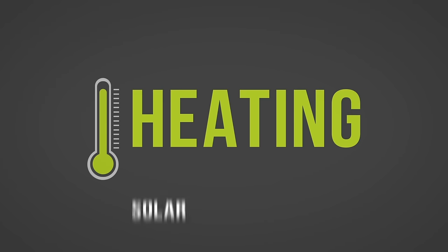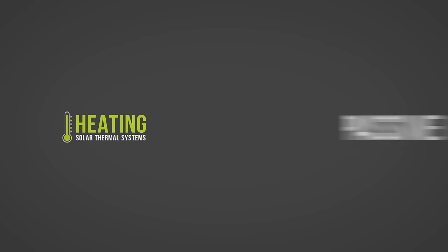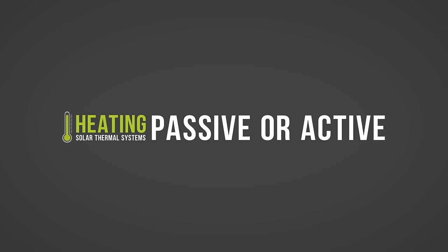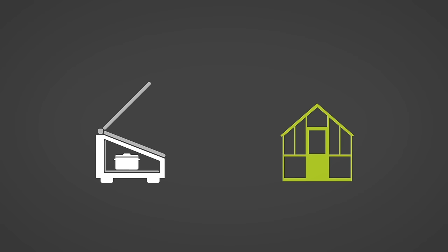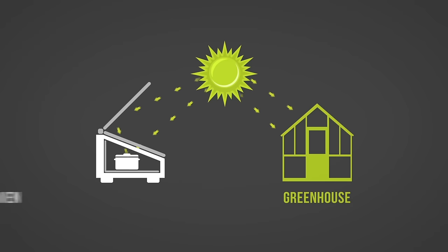For heating, solar thermal systems are referred to as passive or active. Passive systems are more basic and have no moving parts. They simply rely on design features to enhance our ability to capture and use the Sun's rays like a greenhouse or a solar oven.